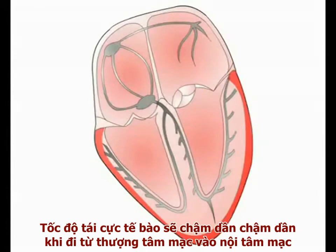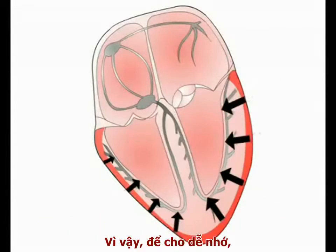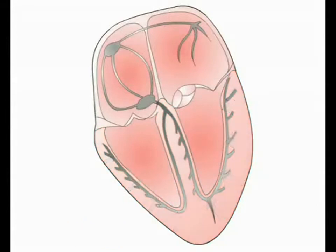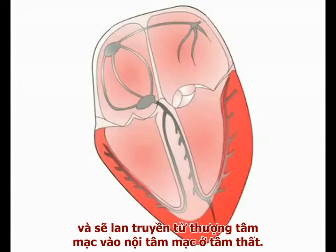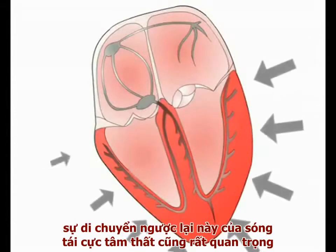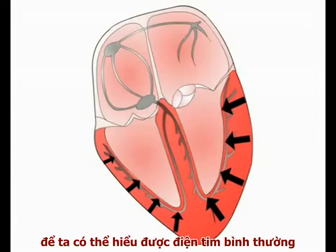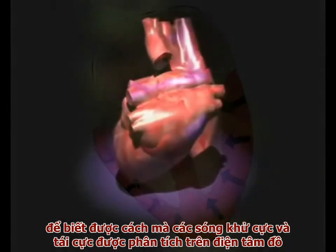The rate of cellular repolarization is progressively slower as we move from the epicardium towards the endocardium. Therefore, perhaps counterintuitively, repolarization spreads through the ventricles in the opposite direction to the depolarization wave. Repolarization begins in the epicardium and then spreads backwards from the epicardial to the endocardial surface of the ventricles. This retrograde spread of ventricular repolarization is important in understanding the normal ECG readout. We will now go on in video 2 to show how the depolarization and repolarization waves are analyzed to produce the normal ECG readout.